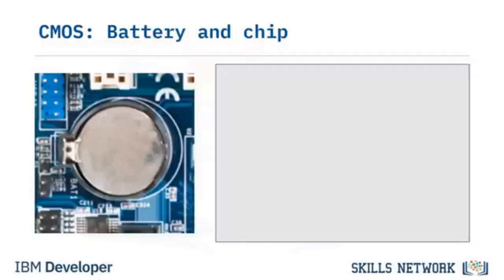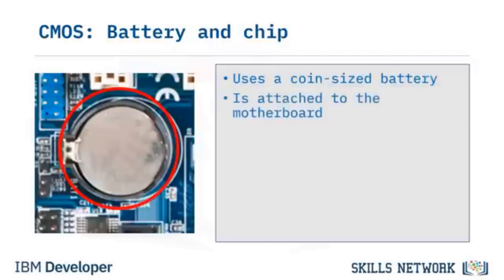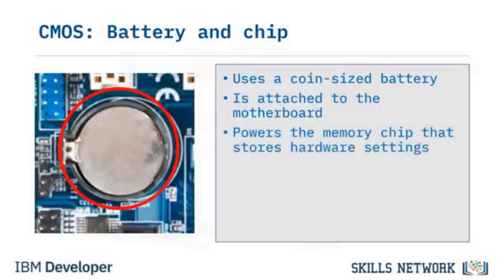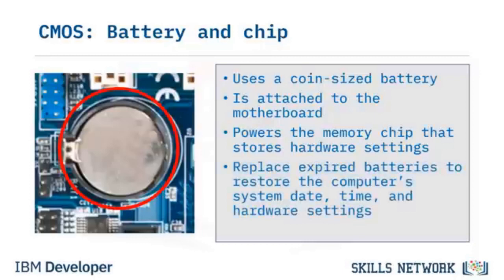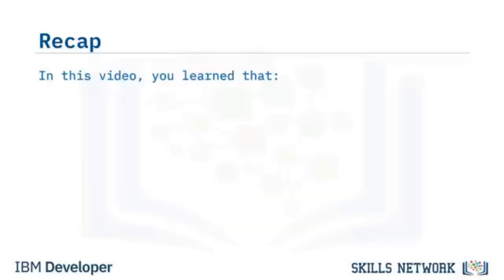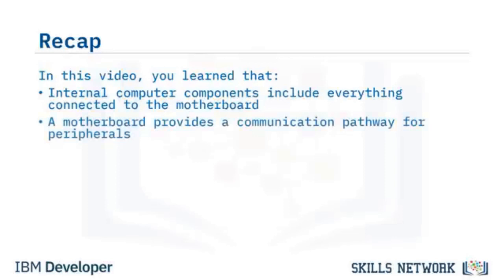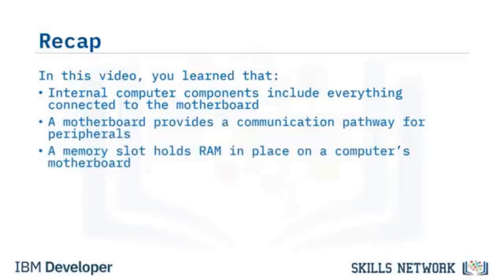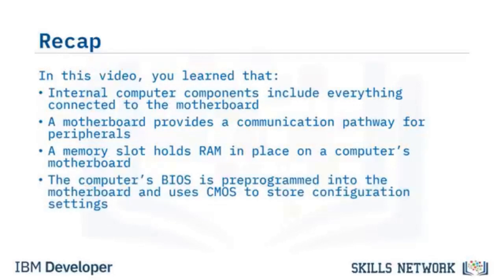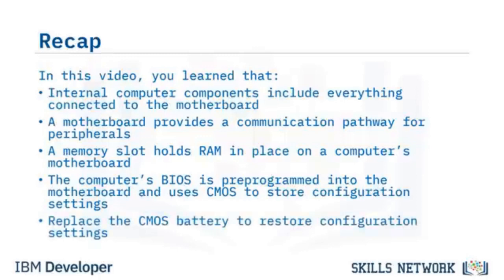CMOS stands for Complementary Metal Oxide Semiconductor. A CMOS battery is a coin-sized battery installed on the motherboard to power the CMOS memory chip, which stores a computer's hardware settings. Like all batteries, CMOS batteries expire, and when the battery expires, the system clock resets — you'll need to replace the battery to restore the computer's system time, date, and hardware settings. In this video, you learned that the BIOS is pre-programmed into the motherboard and uses CMOS to store configuration settings, and you can replace the CMOS battery to restore configuration settings.